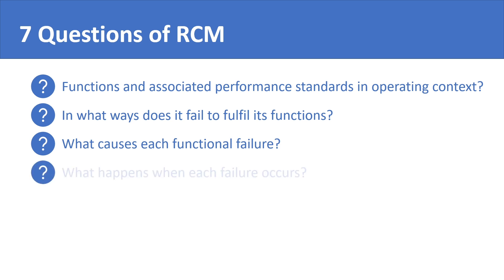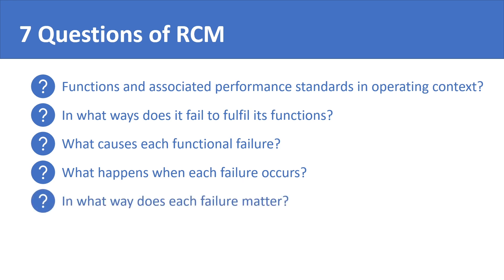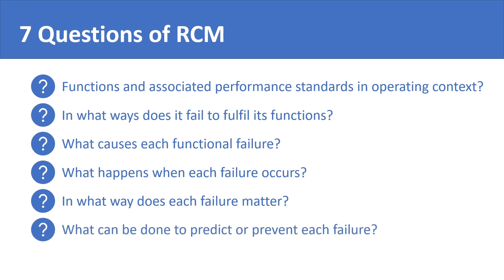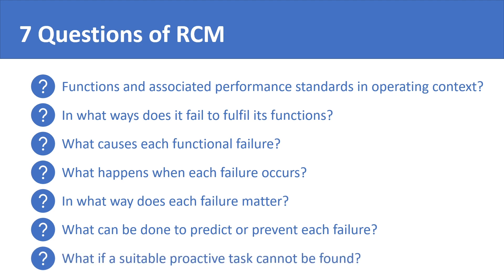What happens when each failure occurs? In what ways does each failure matter? What can be done to predict or prevent each failure? And what should be done if a suitable proactive task cannot be found?